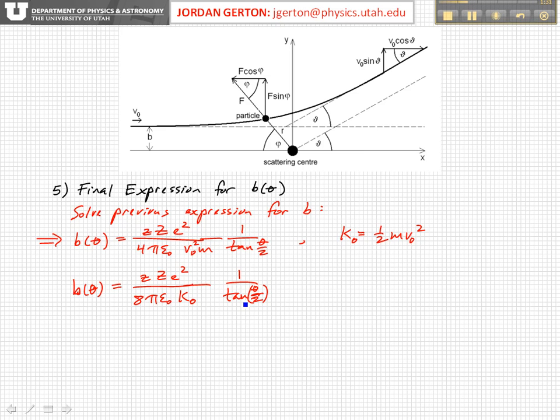Now, this relationship implies that there's a one-to-one correspondence between B and theta. That is the initial impact parameter for the particle coming in and theta, the angle through which it scatters. Now, remember, this is where we've assumed at the beginning that this is a cylindrically symmetric situation. So no matter what, in the three-dimensional case, what matters is just B.